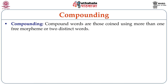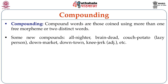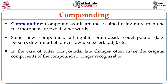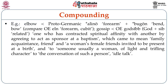Compounding: compound words are those coined using more than one free morpheme or two distinct words. Some new compounds include all-nighter, brain-dead, couch potato (meaning a lazy person), down-market, downtown, knee-jerk, etc. In the case of older compounds, later changes often make the original components no longer recognizable. For example, 'elbow' is from Proto-Germanic alina (forearm) and bogan (bend or bow) — compare Old English ain meaning forearm or cubit.